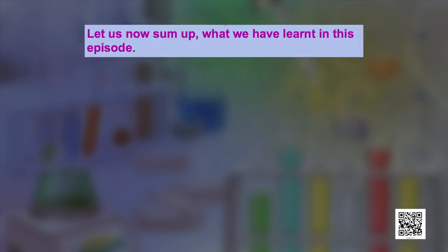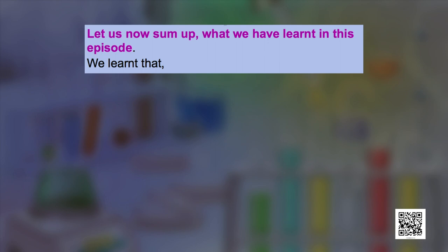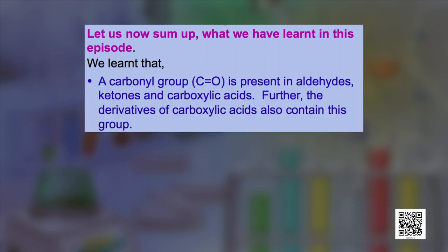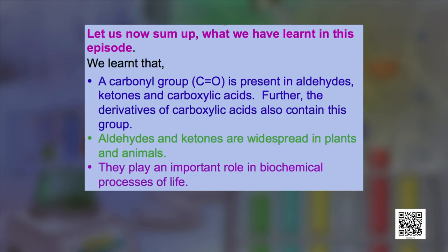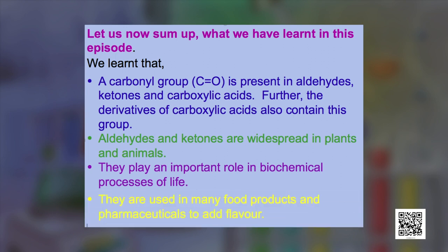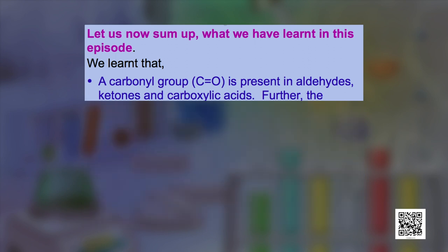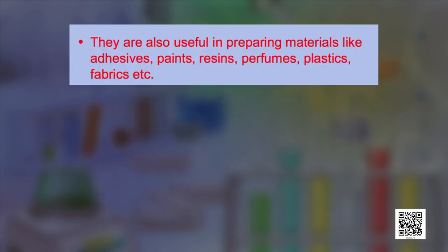Let us now sum up what we have learned in this session. We have learned that a carbonyl group (C=O) is present in aldehydes, ketones, and carboxylic acids, and that the derivatives of carboxylic acids also contain this group. Aldehydes and ketones are widespread in plants and animals and play an important role in biochemical processes of life. They are also used in many food products and pharmaceuticals to add flavour, and are useful in preparing materials like adhesives, paints, resins, perfumes, plastics, fabrics, etc.